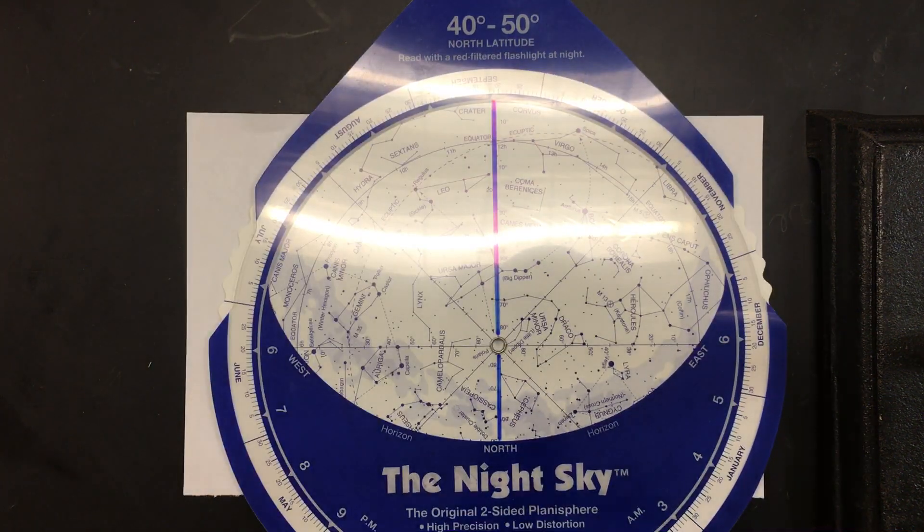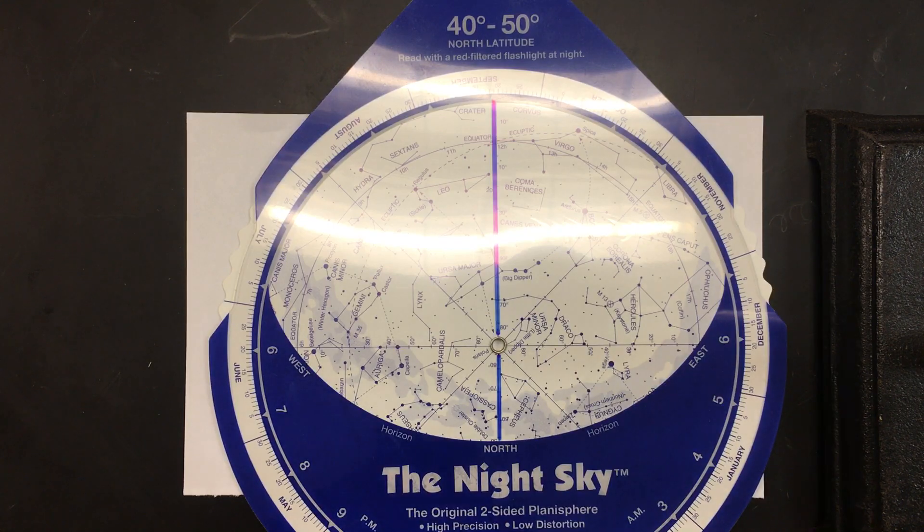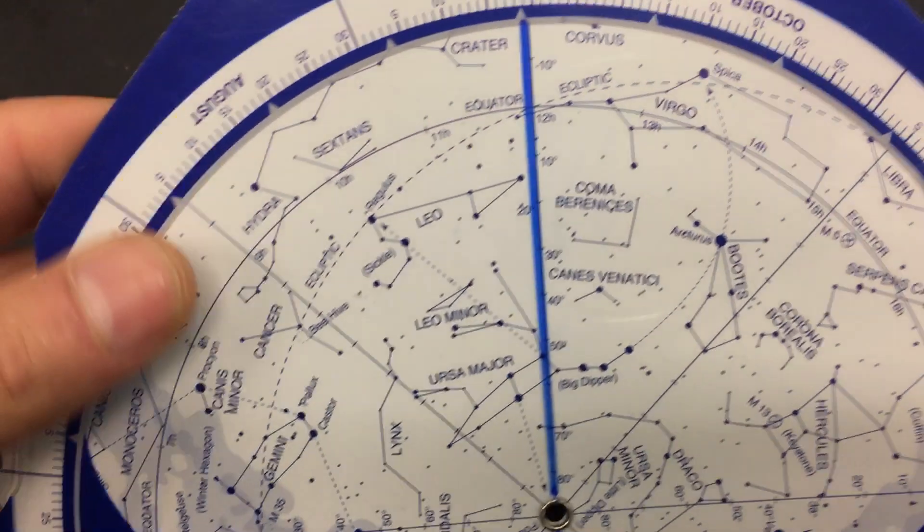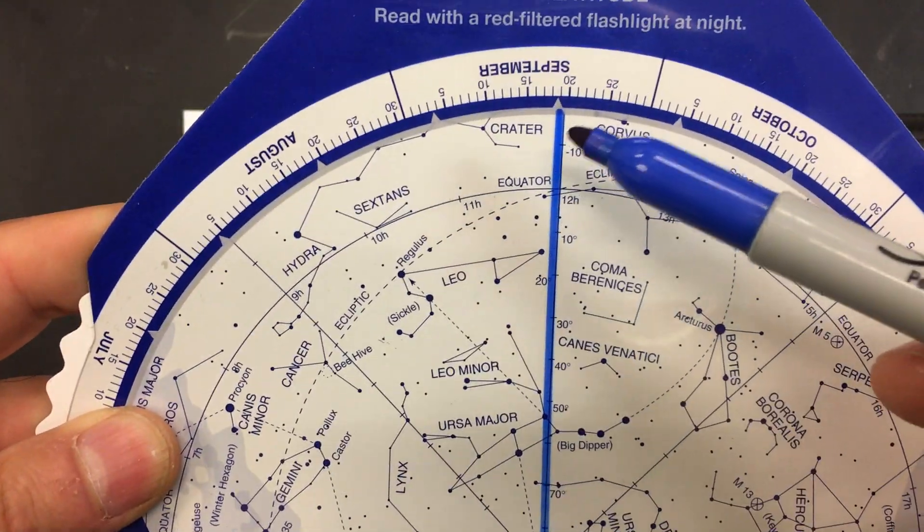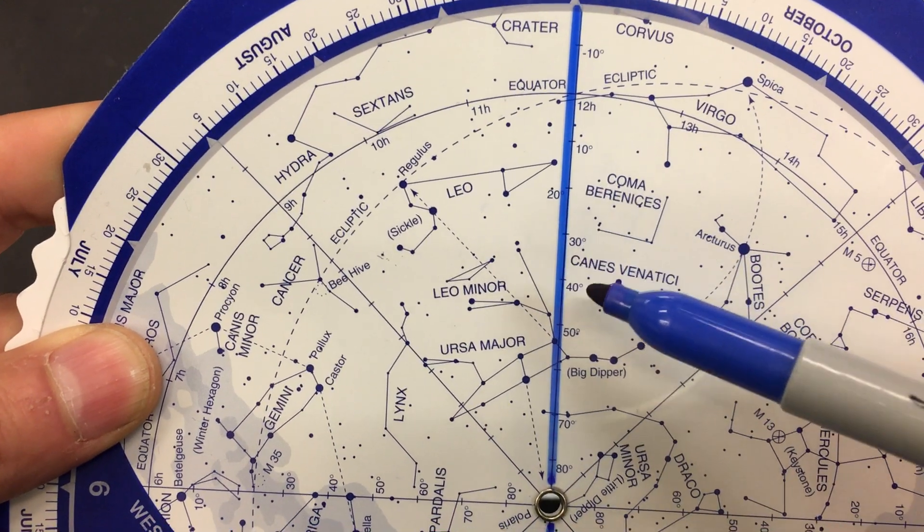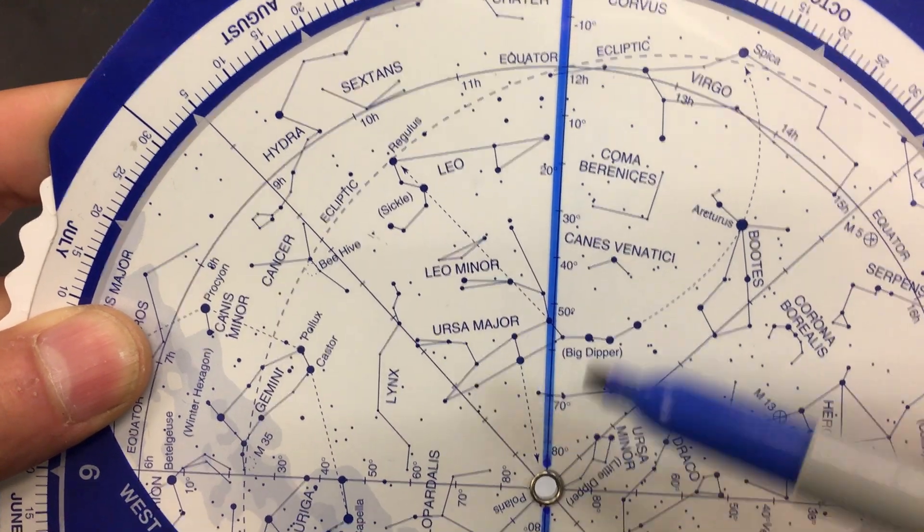So on our planisphere, if you look carefully, you might find that along the axes there are degree marks: 30, 40, 50, 60, 70, and so forth.